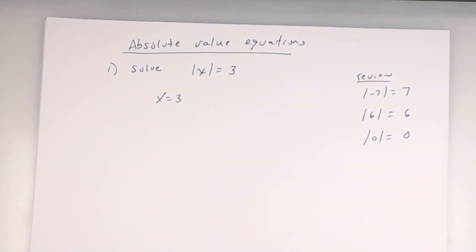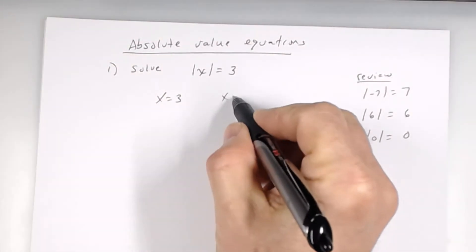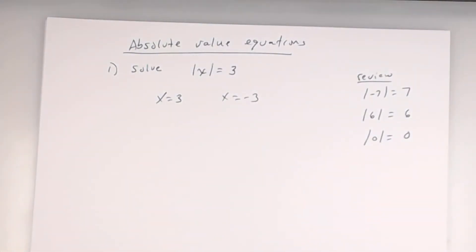Is 3 the only solution? No. The other solution is negative 3, because the absolute value of negative 3 is positive 3. So x equals 3 and x equals negative 3. Whenever you have an absolute value equation, the first step — just like with the radical — is to isolate the absolute value, get it by itself. Once it's by itself, you're going to split it into two equations.